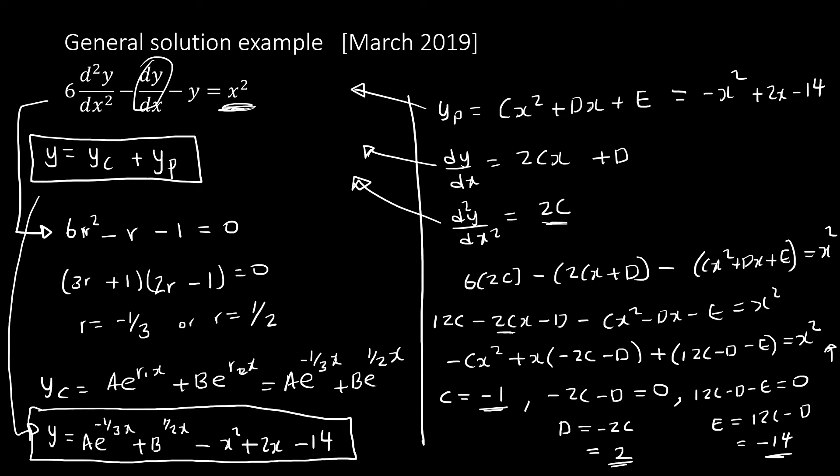The final solution is y equals yc plus yp: that is a·e^(-x/3) plus b·e^(x/2) minus x squared plus 2x minus 14. If this were a particular solution, you would also need to solve for a and b using given initial conditions.